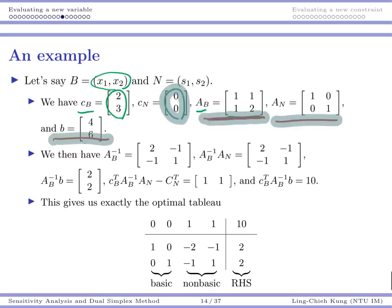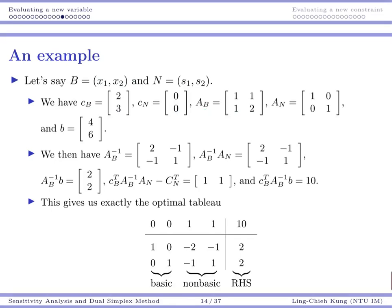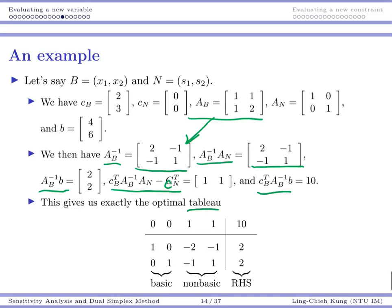With this new basis, Ab⁻¹ is computed and is now different from the identity. Then Ab⁻¹An, Ab⁻¹b, and the reduced cost cb^T Ab⁻¹An minus cn are all recalculated. Putting everything into the tableau, the non-basic columns give [2, -1; -1, 0], and the reduced costs are all non-negative, placed in the objective row.